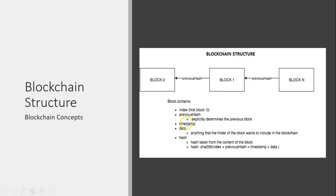We also maintain a timestamp inside a block because it is important to understand when a particular transaction took place — whether a financial transaction or any other type of data structure involved in the blockchain. After this comes the data, which is anything that the creator of the block wants to include in the blockchain. Then there is the hash, which is computed from the content of the block using the cryptographic function SHA-256. The 256-byte hash is formed from index plus previous hash plus timestamp plus data, giving you the hash of the particular block.